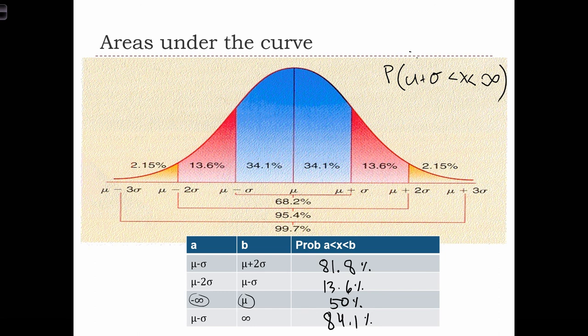We know that what we are looking for is the probability to the right of μ plus σ. So we're looking for this area where this extends out to infinity. Now, we know that the entire right half of this curve has an area of 50%.